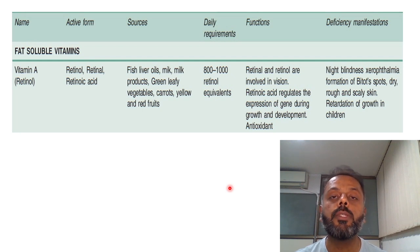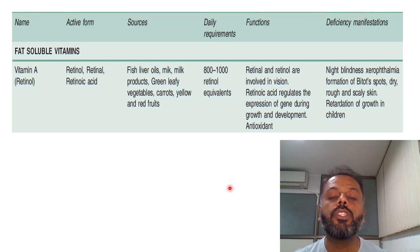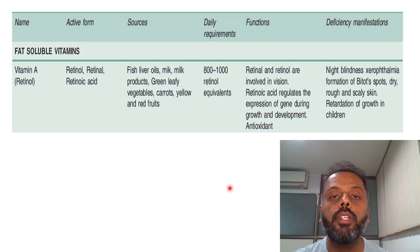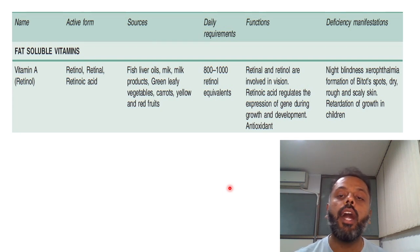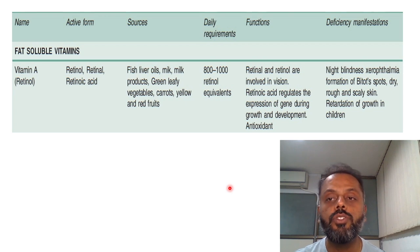Another important deficiency manifestation is Bitot's spot, which is a triangular white patch on the conjunctiva on either side of the cornea. Another important deficiency is keratomalacia, which is the softening of the cornea due to necrosis and ulceration. Additionally, the skin becomes dry, rough, and scaly, and there will be retardation of growth in children.